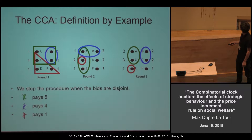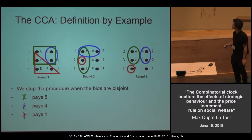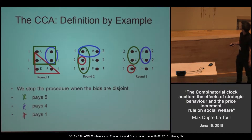The green bidder pays five and gets A and C. The blue bidder pays four. The red bidder pays one and gets E. So this is the idea of the mechanism.